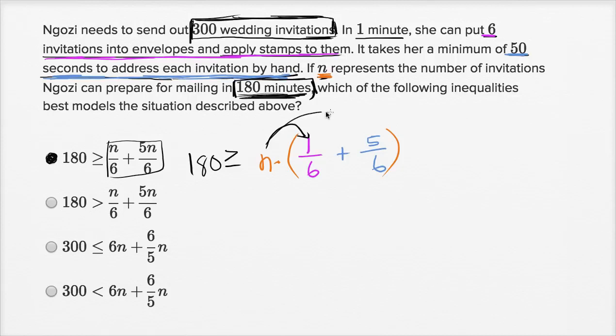And if you distribute the n, you're going to get this thing right over here. You're going to get 180 is greater than or equal to n over six plus five times n over six, which is exactly what you have here. But this is really interesting because just looking at the choices, it actually jumped out pretty fast that this was probably going to be the one that we cared about.